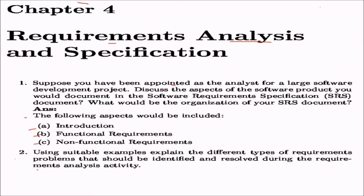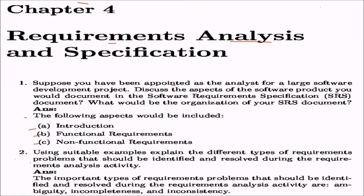Once you are gathering requirements, there may be some problems or concerns that first need to be identified and then resolved. The important types of requirement problems that should be identified and resolved under requirement analysis activity are: ambiguity, incompleteness, and inconsistency.